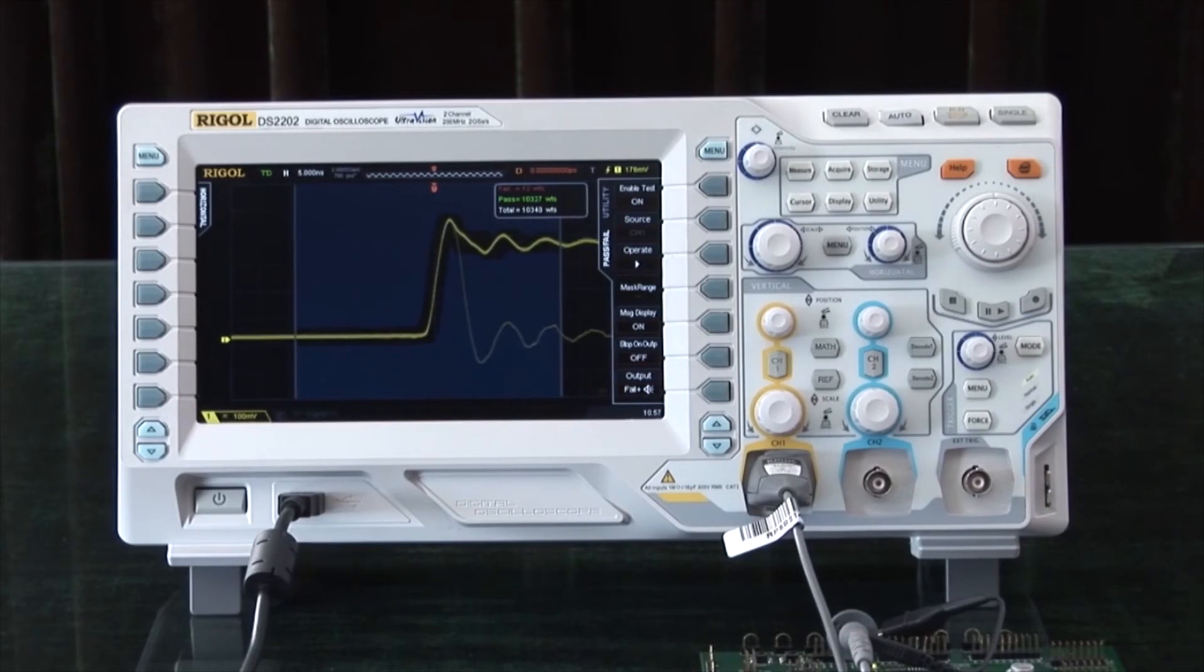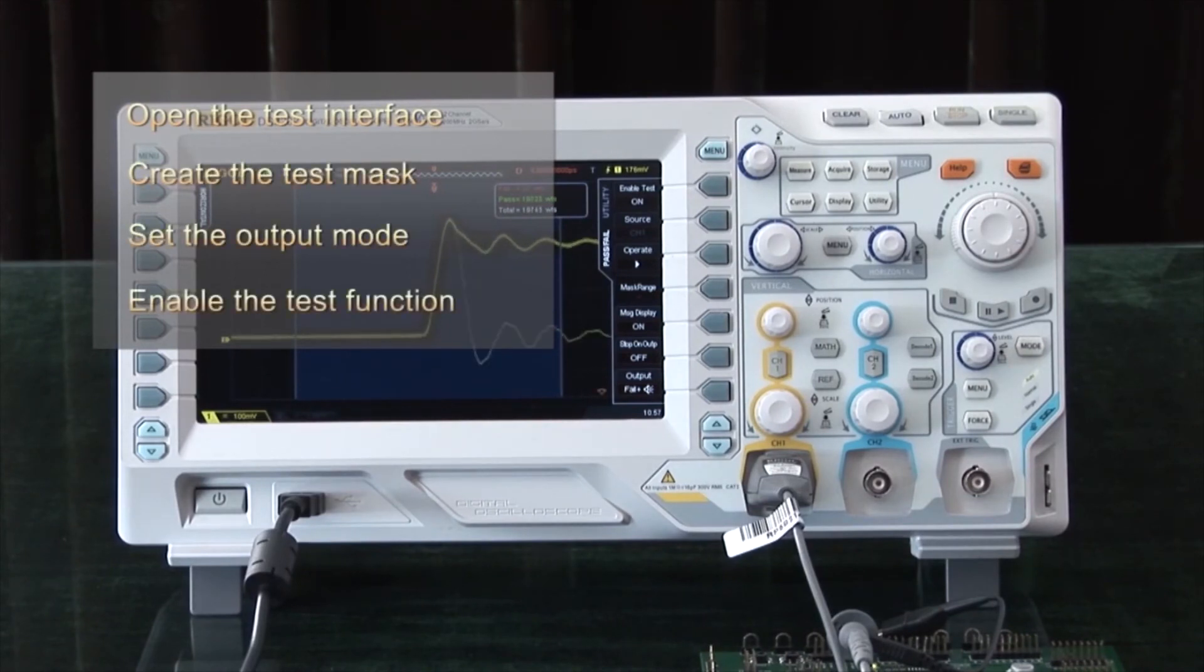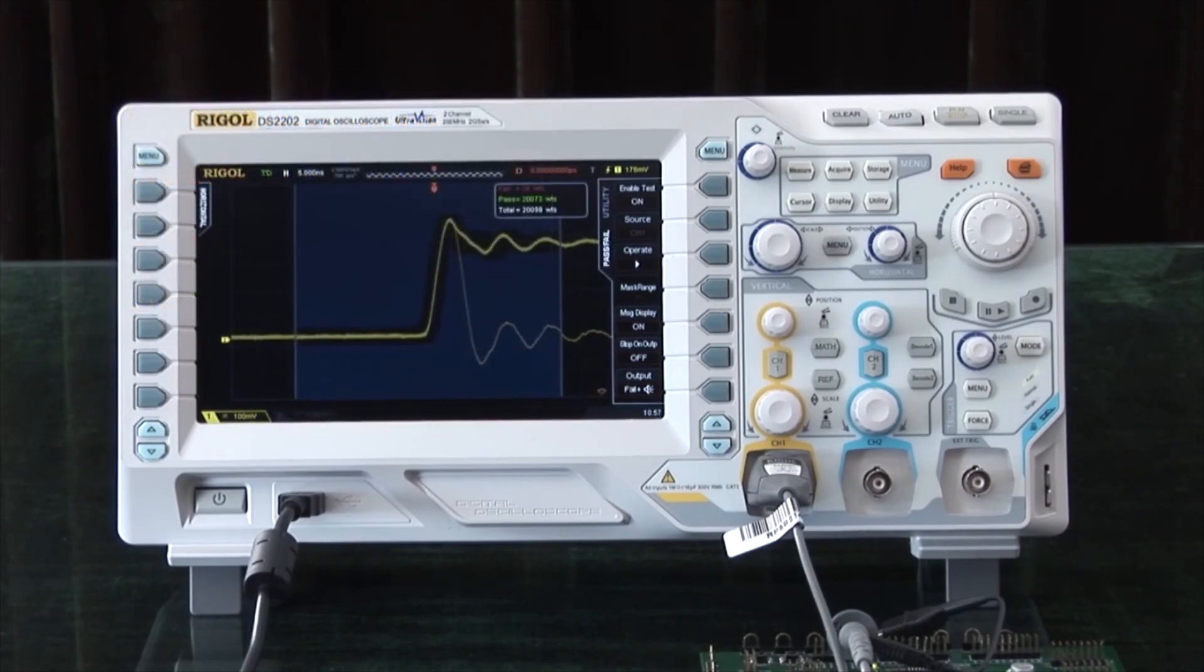This concludes the introduction to the pass-fail testing capabilities of Rigol Oscilloscopes. The key points include opening the test interface, creating the test mask, setting the output mode, and enabling the test function. Thank you.